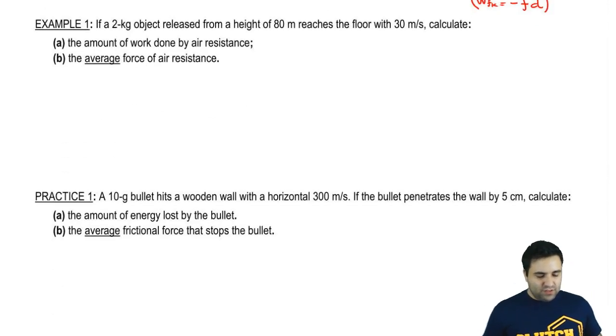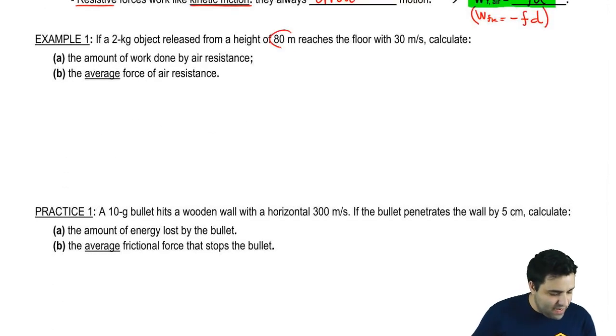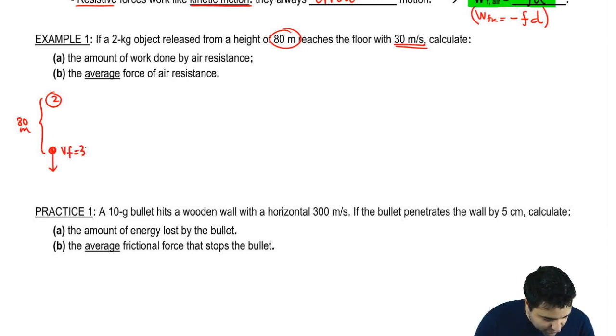Let's do an example here. We have a 2 kilogram object released from a height of 80 and it reaches the floor with 30. So let's draw that. 2 kilogram object released from a height of 80 meters. And it reaches the bottom over here with a final speed of 30. So I'm going to put V final equals 30. The initial velocity, since this is released, it's released from rest. And obviously it falls that way.